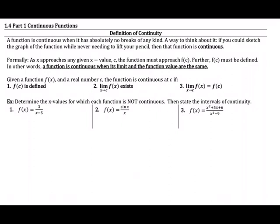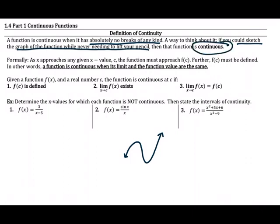If you think about continuous functions in the most basic way, you're really asking yourself: can I draw the function without ever having to lift up my pencil? A function is continuous when it has absolutely no breaks of any kind. If you could sketch the entire function while never needing to lift your pencil, then you can say that function is continuous. That's a conceptual, informal way to understand it — it's not a rigorous definition.